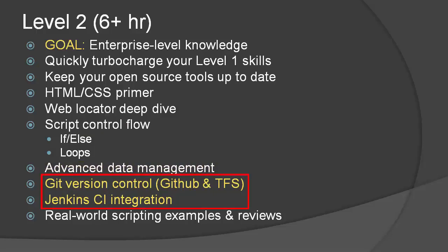These two sections highlighted in yellow I believe are incredibly important for any test automation team. They should know Git version control, whether on GitHub or TFS. This gives the team the ability to collaborate and maintain versions of their scripts that match the products being developed.